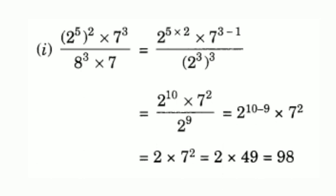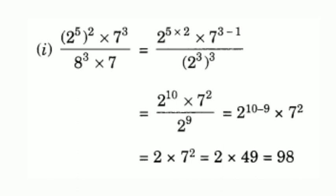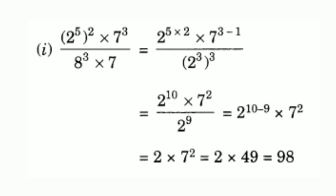We now have 2 raised to 10 on the numerator and 2 raised to 9 in the denominator. Apply the division laws of exponents: 2 raised to 10 minus 9 means 2 raised to 1, that is 2, into 7 raised to 2. So the answer is 2 into 7 squared. 7 squared is 49, and 2 into 49 equals 98. The answer is 98.